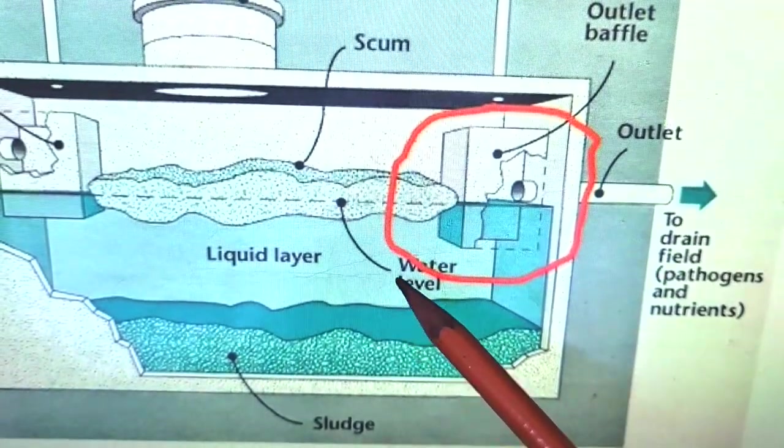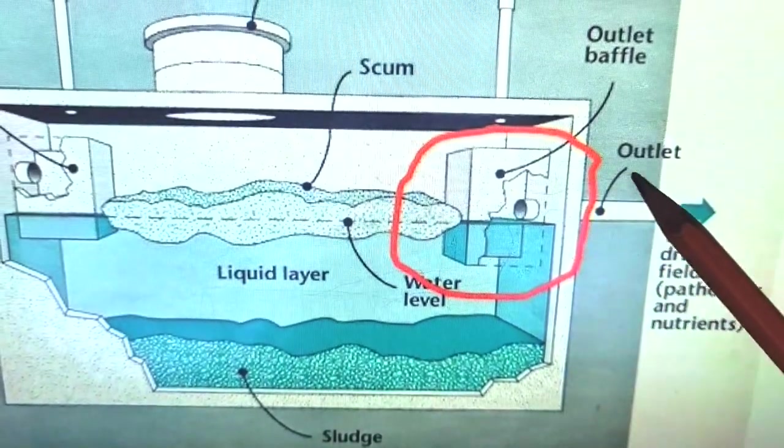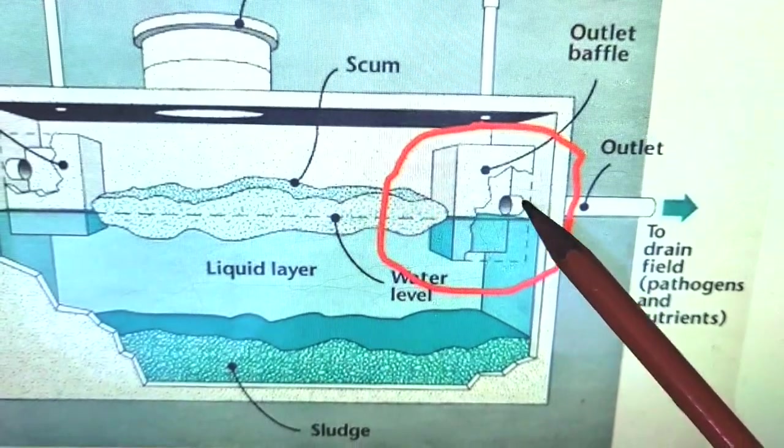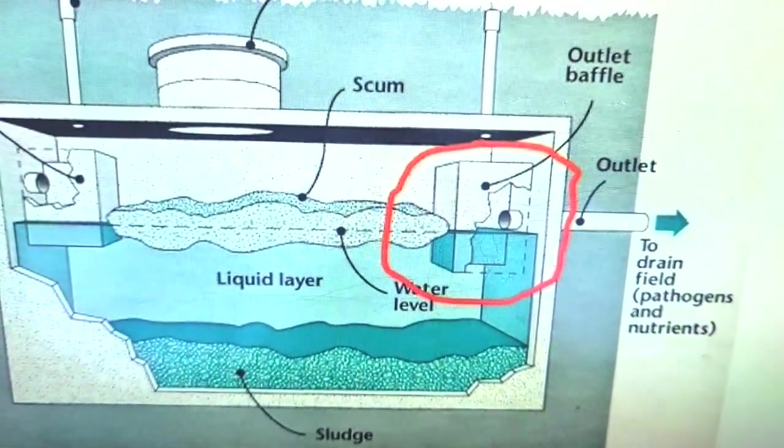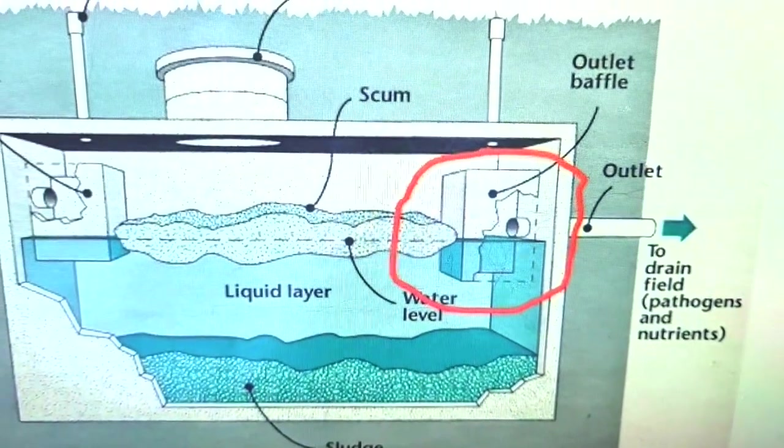It keeps the sludge out. And as you can see, it only lets the nice, clean, clear blue water out. I say that advisedly, clean, clear, you know what I mean. And that's all it does. So that's all the baffle does. It just stops the sludge and the scum from getting into the outlet pipe and allows only the blue water.